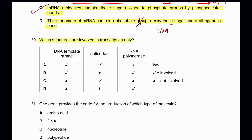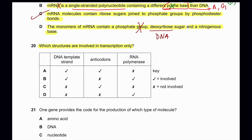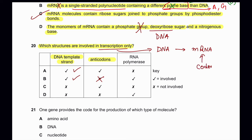Question 20: Which structures are involved in transcription only? Transcription is the process of making mRNA from DNA. DNA template strand — yes, DNA acts as a template in transcription. Anticodons are not involved in transcription; only codons from mRNA are involved. RNA polymerase is involved in producing the RNA. So B — DNA template strand and RNA polymerase — is the only correct option.